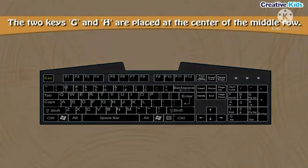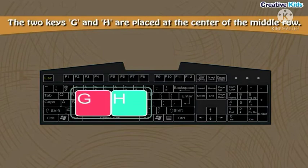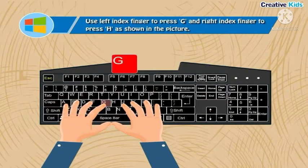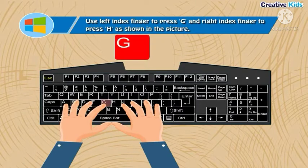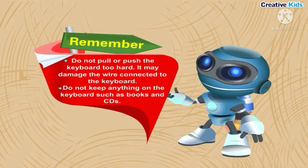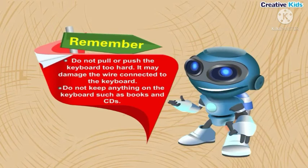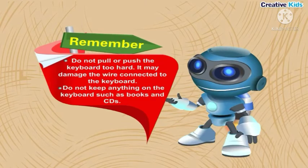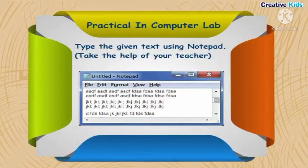The two keys G and H are placed at the center of the middle row. Use the left index finger to press G and the right index finger to press H. Remember: do not pull or push the keyboard too hard. Do not keep anything on the keyboard such as books and CDs. Practical: type the given text using notepad with the help of your teacher.